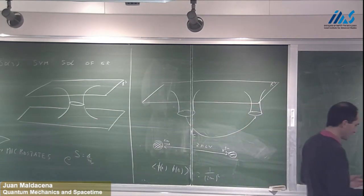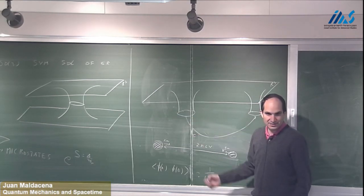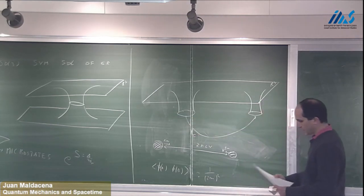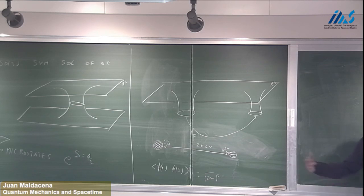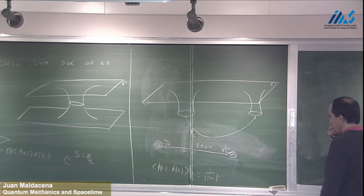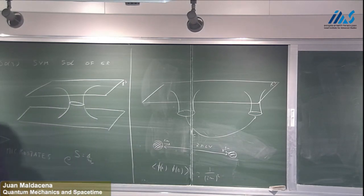Are these wormholes traversable? Can we use this geometric connection to send signals from one side to the other? What we see from the geometry is that we cannot use it to send signals. The two horizons touch at one point and then start moving away from each other — the wormhole expands along one direction but contracts along the sphere directions, collapsing before you can make it through.